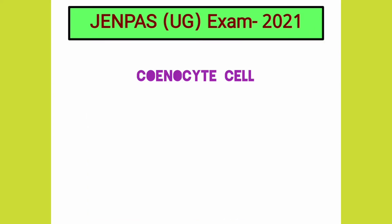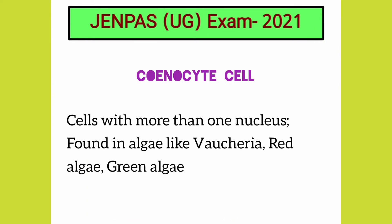What is a coenocytic cell? If a cell contains more than one nucleus, then it is called a coenocytic cell. This kind of cell can be found in algae like Vaucheria, red algae, green algae, etc.